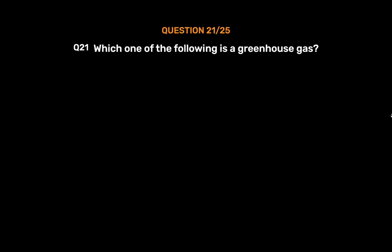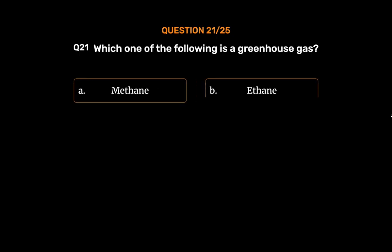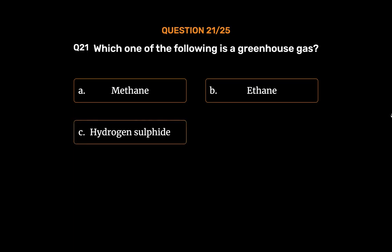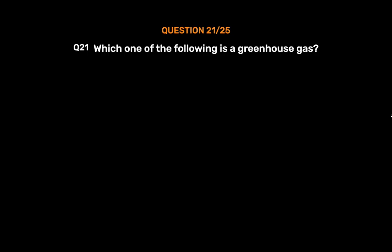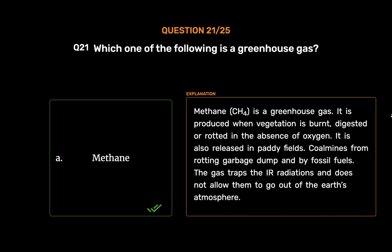Question number 21. Which one of the following is a greenhouse gas? Option A, methane; Option B, ethane; Option C, hydrogen sulfide; Option D, acetylene. The correct answer is Option A, methane. Methane (CH4) is a greenhouse gas. It is produced when vegetation is burnt, digested, or rotted in the absence of oxygen. It is also released in paddy fields, coal mines, rotting garbage dumps, and by burning fossil fuels. The gas traps IR radiation and does not allow it to escape the earth's atmosphere.